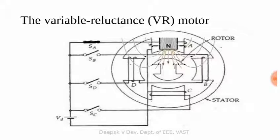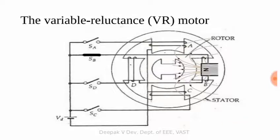Now we open the switch for coil A and close the switch for coil B. When coil B is excited, the magnetic field lines concentrate toward the B-poles. The rotor will align to a new position of minimum air gap corresponding to the B stator poles.